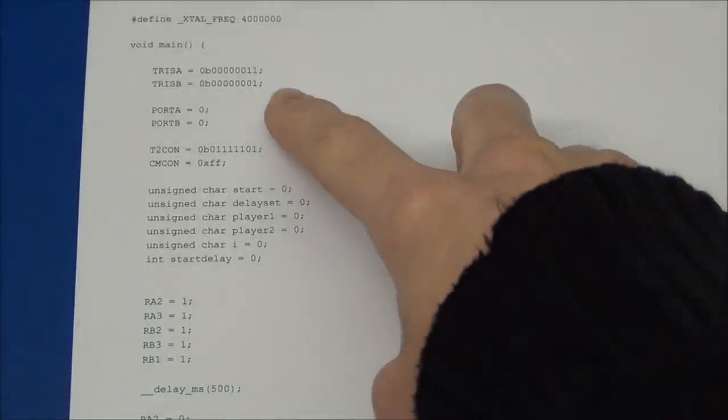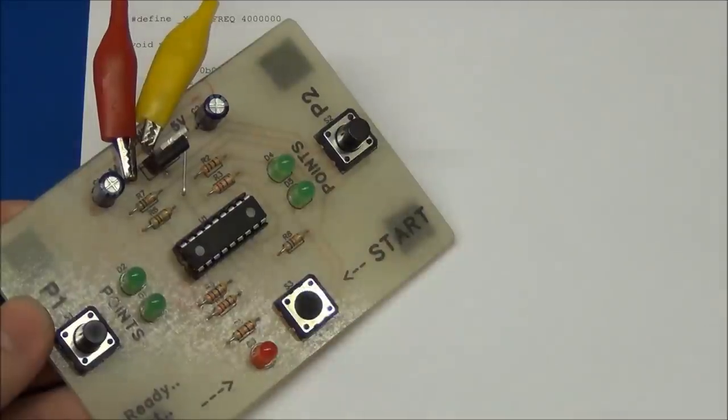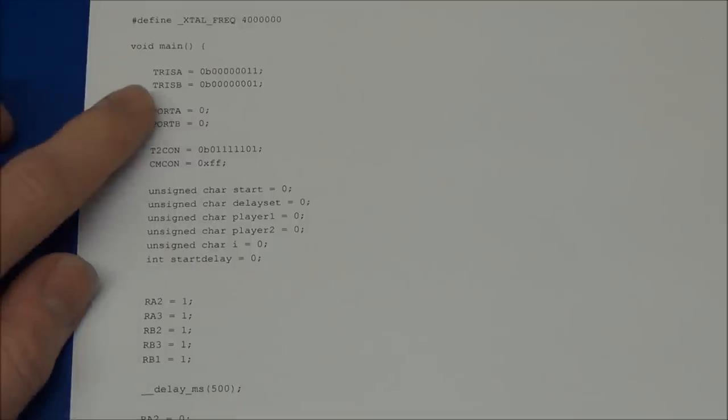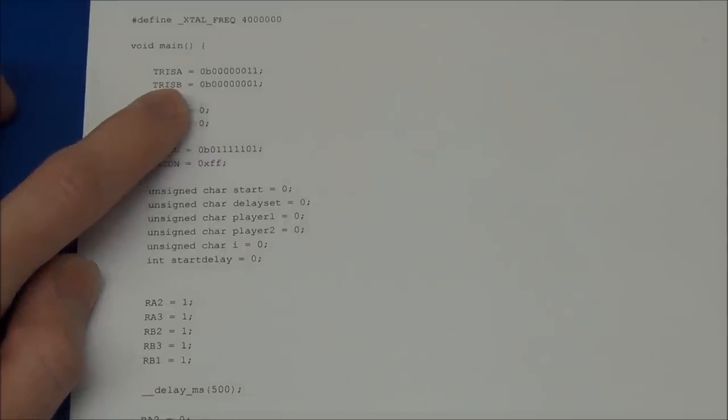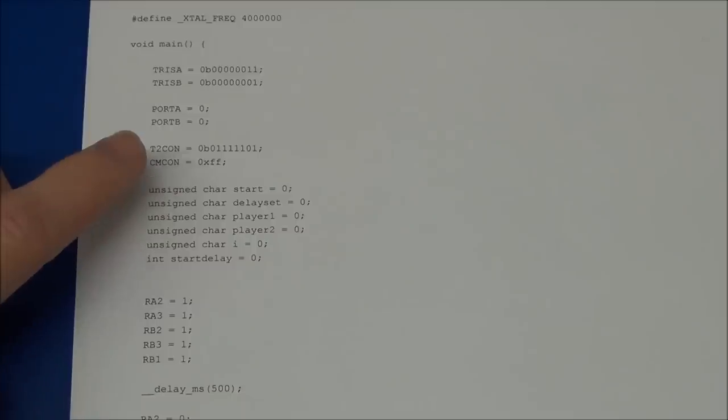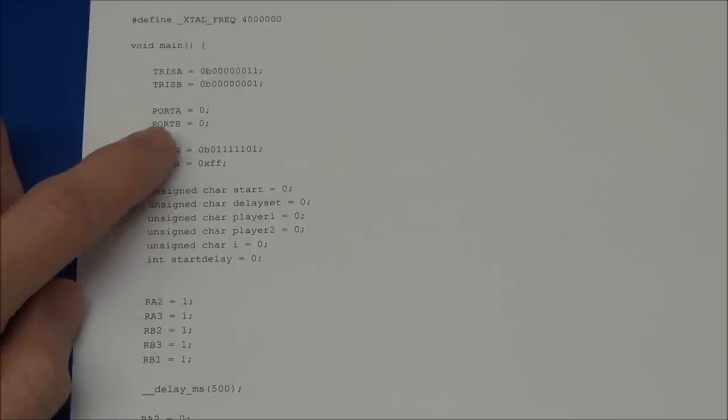And of course these input pins are where our buttons will go. And this port A and port B determines if the pins are high or low voltage. And since this is set to 0 all the pins will just be at the low voltage or 0 volts for both port A and port B.